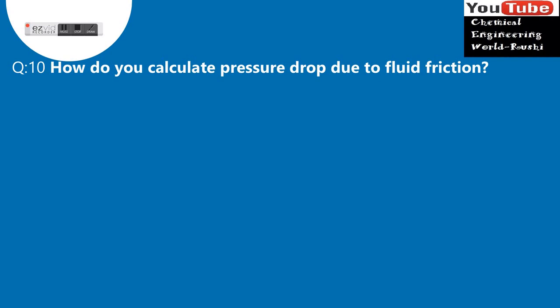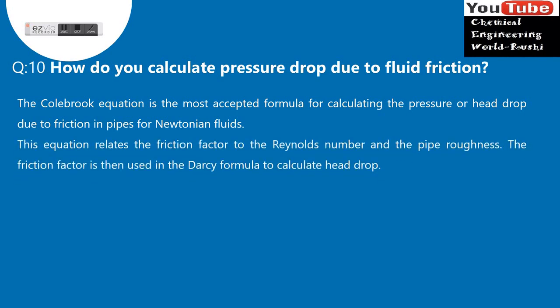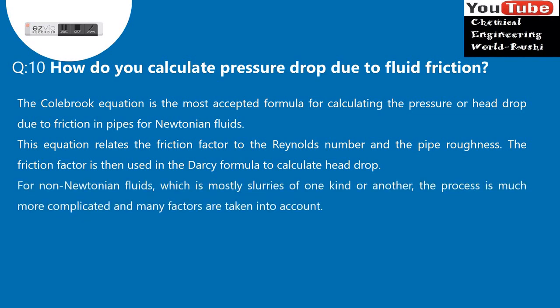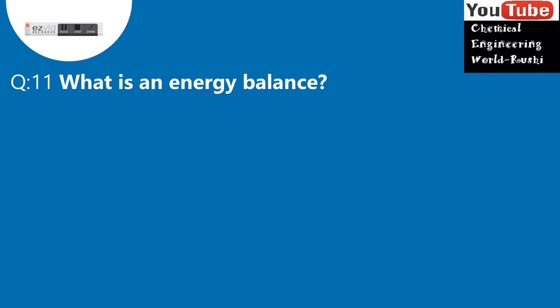Question 10: How do you calculate pressure drop due to fluid friction? The Colebrook equation is the most accepted formula for calculating the pressure or head drop due to friction in pipes for Newtonian fluids. This equation relates the friction factor to the Reynolds number and the pipe roughness. The friction factor is then used in the Darcy formula to calculate head drop. For non-Newtonian fluids, which are mostly slurries of one kind or another, the process is much more complicated. Some factors taken into account are: particle size and distribution, settling velocity of particles in the mixture, viscosity variation of the mixture, and solids transportation mode.